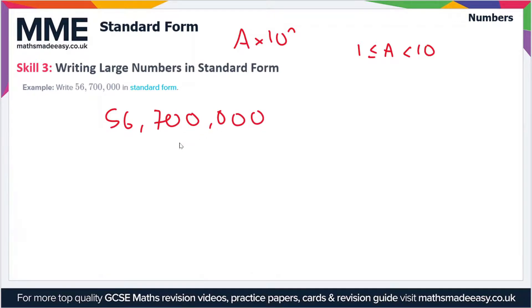Let's put a .0 on the end here because this is going to be useful to us. First of all, we want to find out our value for A. Now A has to be between 1 and 10, so A is going to have to be 5.67.